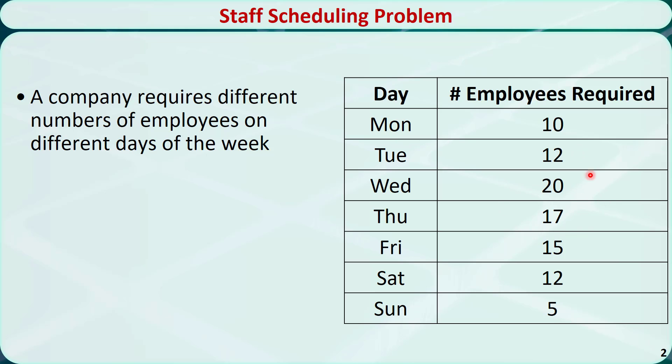This table shows the numbers of needed employees for every day. Wednesday is the busiest day and the company needs 20 employees that day. Sunday is the least busy day and the company needs 5 employees that day.